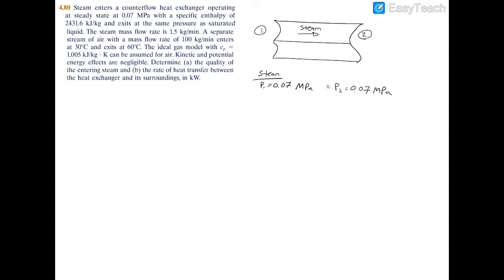And we're also told that the specific enthalpy h1 is 2431.6 kilojoules per kilogram. Now we're told that it exits as a saturated liquid, so x2 is equal to zero. And finally we're told that the mass flow rate m dot is 1.5 kilograms per minute, which is also 0.025 kilograms per second.